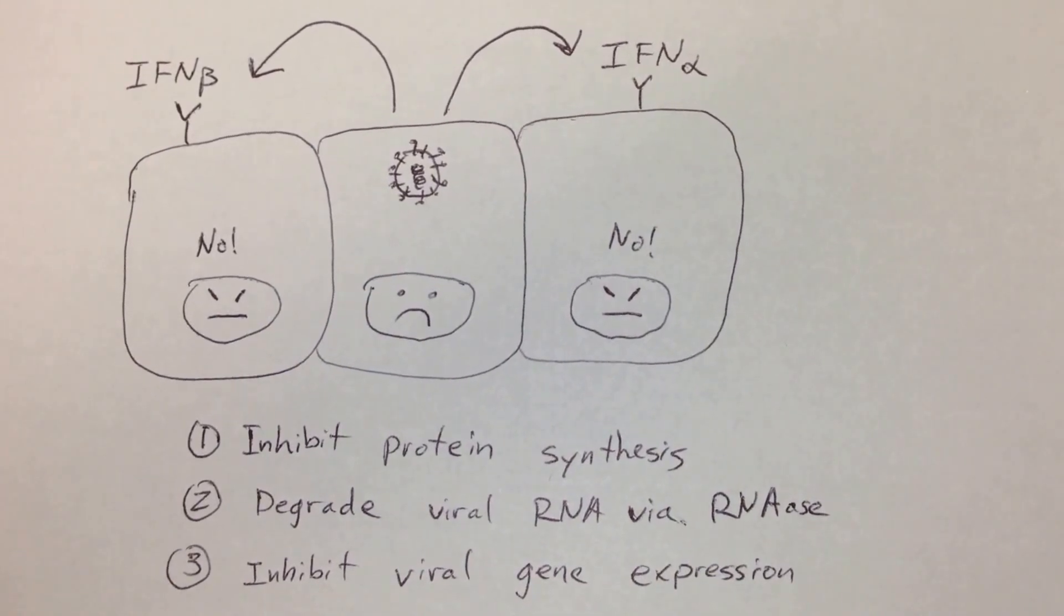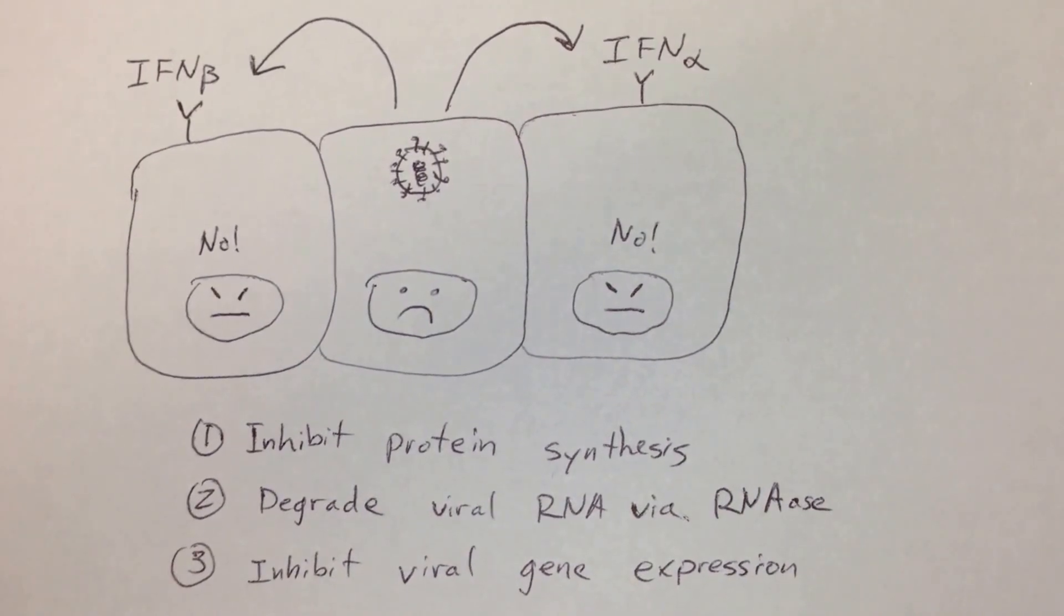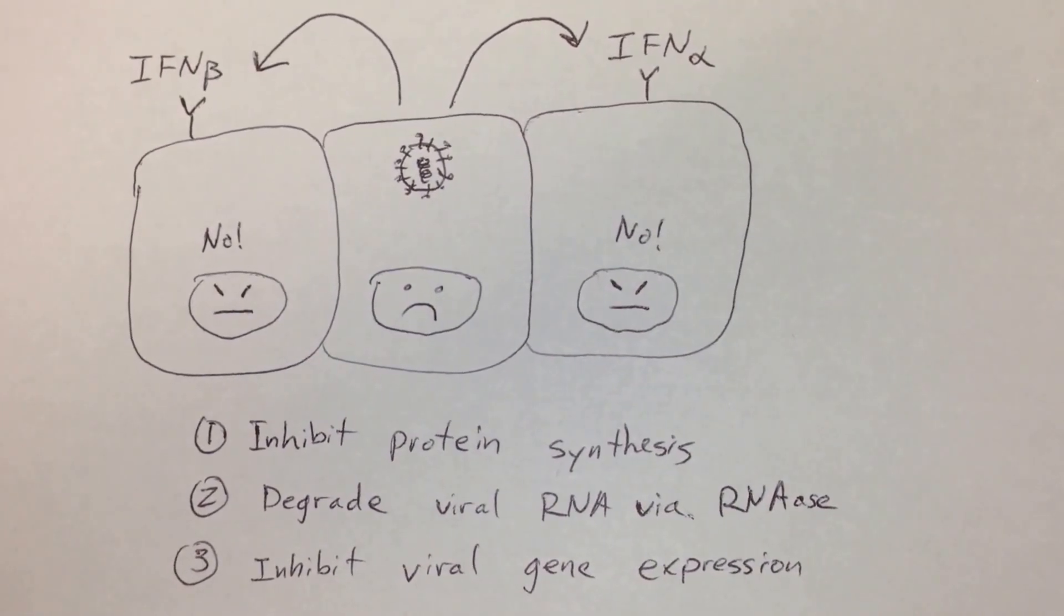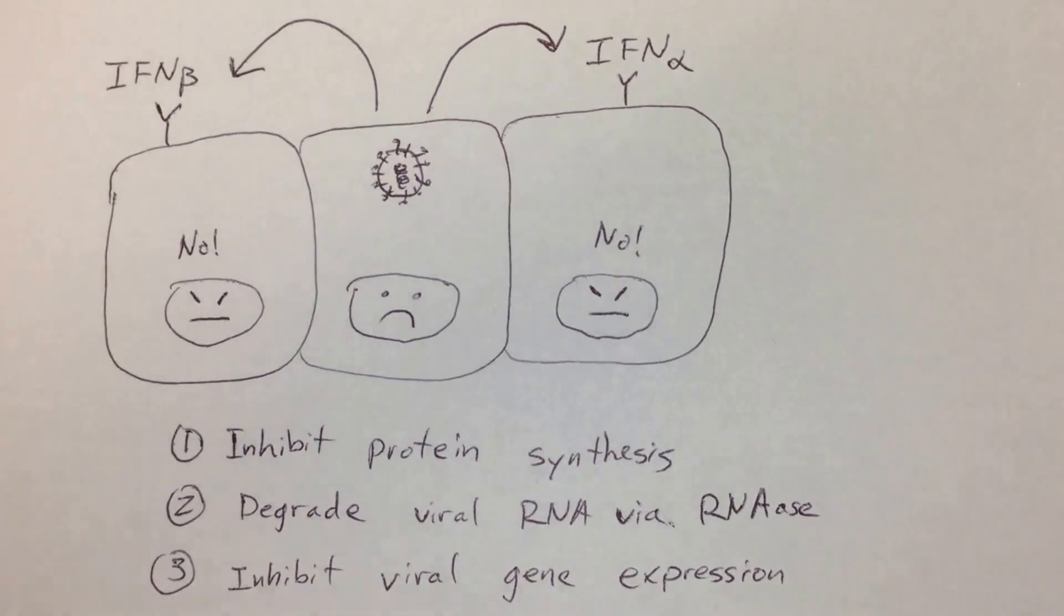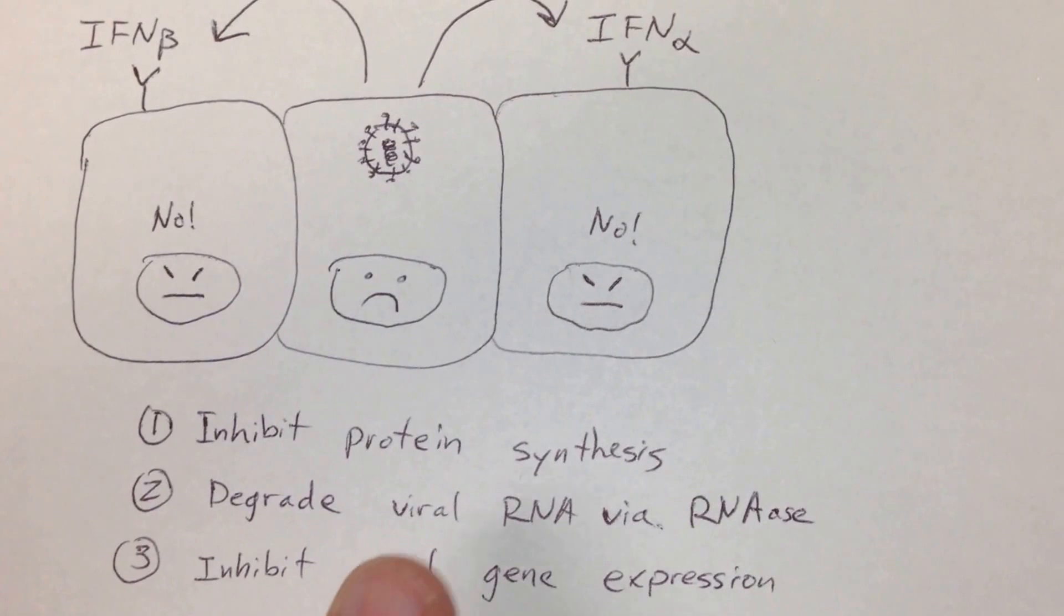But he's a nice cell, so he tells his neighbors, hey neighbors, you don't want to die a sad death like I'm going to. So I'm going to secrete interferon alpha and beta. And if you have receptors to pick them up, which you should, then you'll know that there's a virus in the area and you need to lock down your cells.